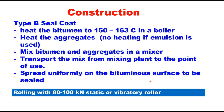For Type B seal coat, the procedure is similar: heat bitumen to 150 to 163°C in a boiler, and heat the aggregate separately (no heating required if emulsion is used). Mix bitumen and aggregate in a mixer, transport the mix from the mixing plant to the point of use, and spray uniformly on the bituminous surface to be sealed. Rolling is again done with a static or vibratory roller of 80 to 100 kN.